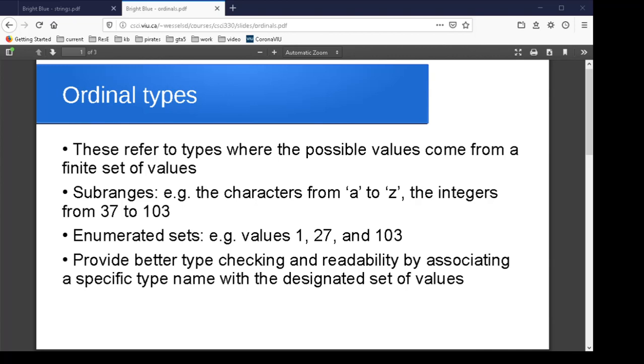The other set of ordinal types typically supported are enumerated sets where you actually give a list of the values that make up this data type. So we'll consider those two, and the idea of having an ordinal type is that it allows you to associate a type name with a particular set of values.